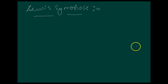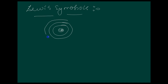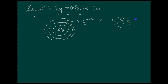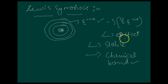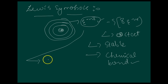Next is Lewis symbols. In the formation of a molecule, only the outer shell electrons take part in chemical combination. This is the kernel and these are the outermost shells — called orbitals — which hold the electrons. They can occupy a maximum of eight electrons in the outer shell, forming an octet structure, and these are the most stable atoms.